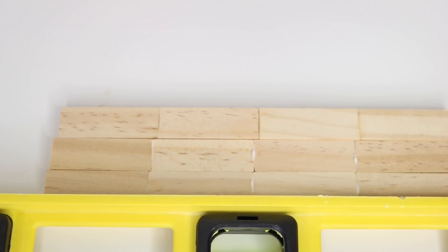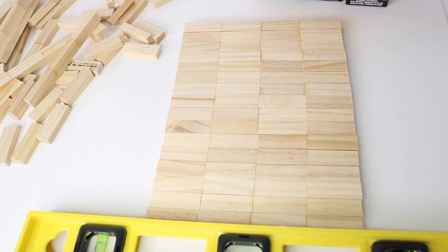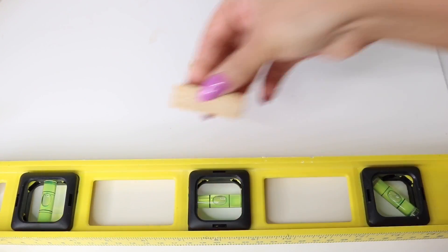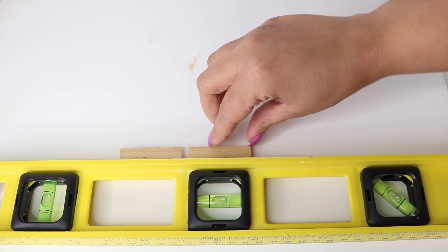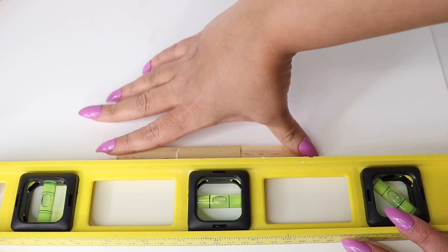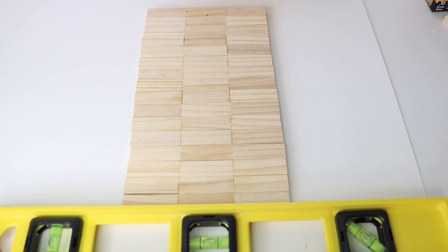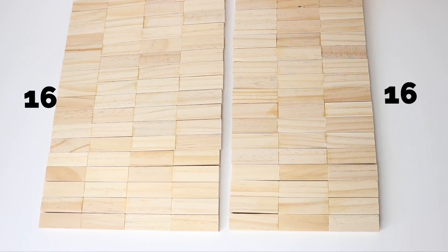So I'm going to make 16 in total, and these are going to be the sides of the frame. Now for the tops and bottoms, I'm going to create a row of three and I'm going to do the exact same thing, building on top of each other until I have 16 of these pieces. You should have 32 pieces in total.